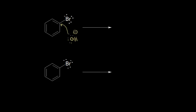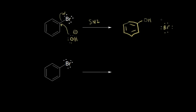When the nucleophile attacks, if we're thinking about an SN2 type mechanism — a concerted mechanism where these electrons kick off onto the bromine — we would get our benzene ring where the OH has substituted in for the bromine, and the bromine has left as the bromide anion with a negative 1 formal charge. It's a decent leaving group.